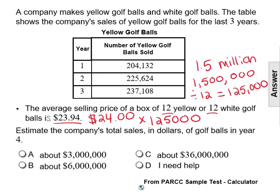So 125,000 boxes times $24 is an estimation of $3,000,000, which is answer choice A.